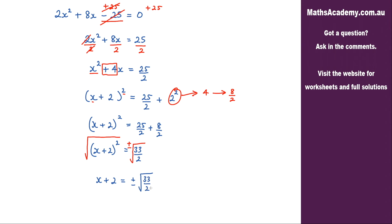Now the last step is to eliminate the plus 2, and we do that by subtracting 2 from both sides. So we end up with x = -2 ± √(33/2).